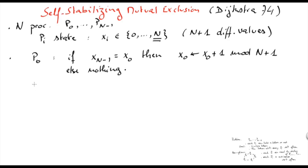If Pi is different than P0, when Pi is activated, it performs the following instruction: it compares its state with its previous neighbor. If Xi-1 is different than Xi, then Pi simply copies the state of its previous neighbor. Otherwise, it does nothing.